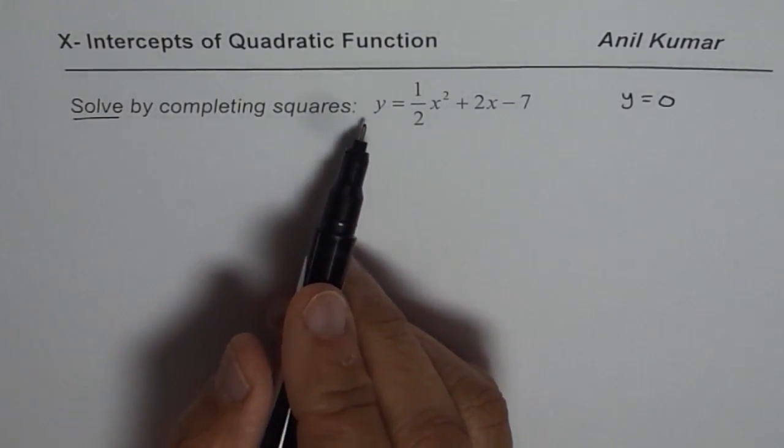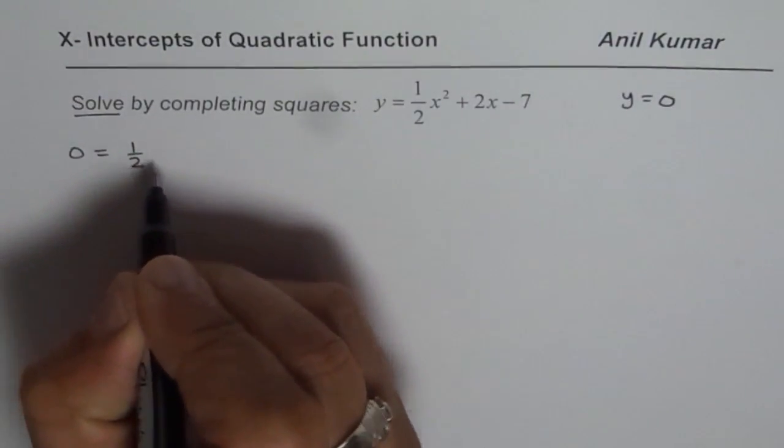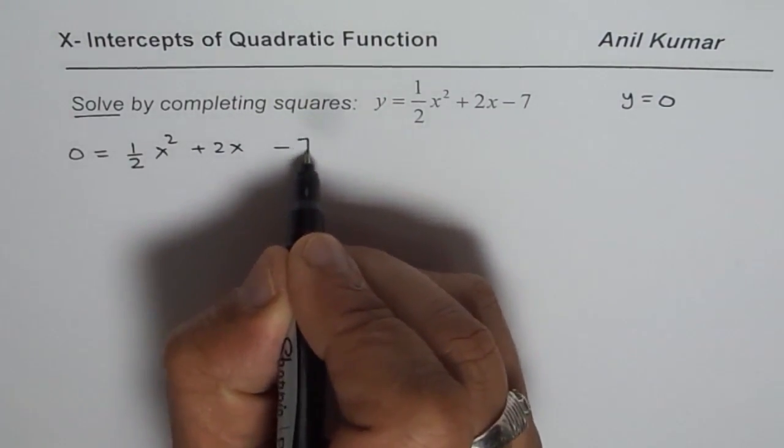So now let us solve for x. We will write y equals 0 here and then continue. So we have half of x squared plus 2x minus 7.